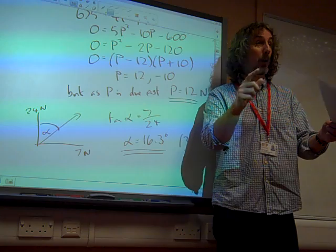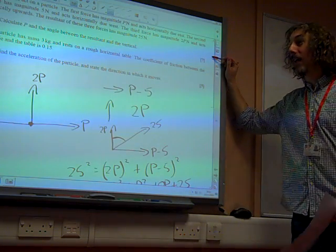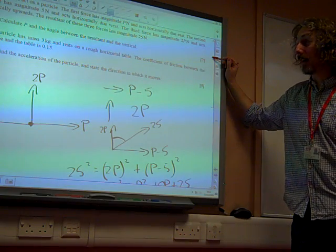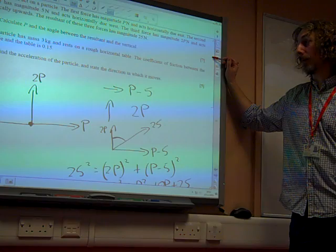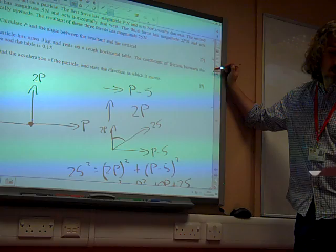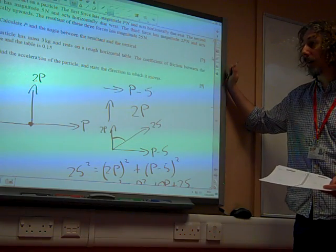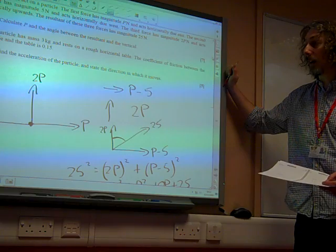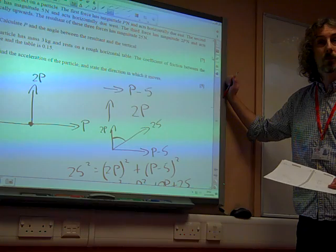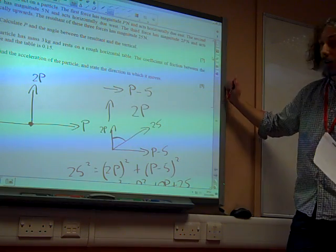That's only part one, I was getting carried away. Part two. The particle has mass 3 kilograms and is at rest on a rough horizontal table. The coefficient of friction between the particle and the table is 0.15. Again we've got this whole thing of it being at rest, tells us something's going on there. Find the acceleration of the particle and state the direction in which it moves. I feel like another diagram.